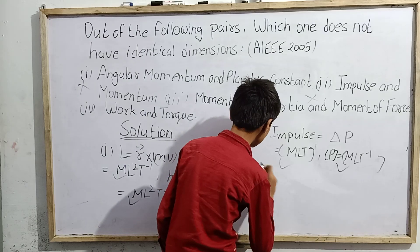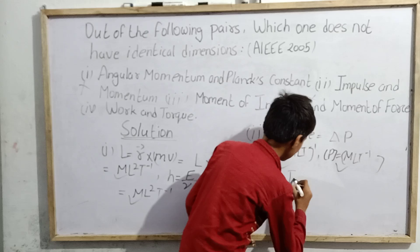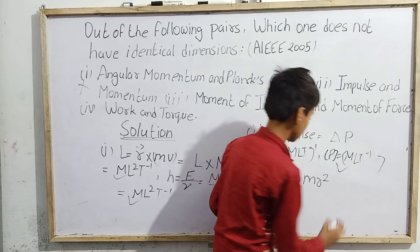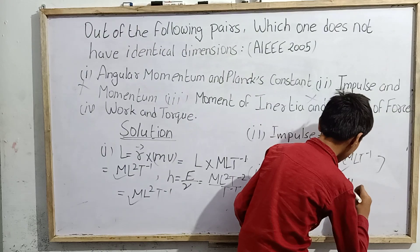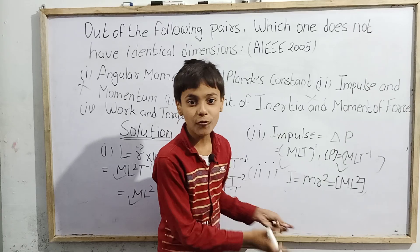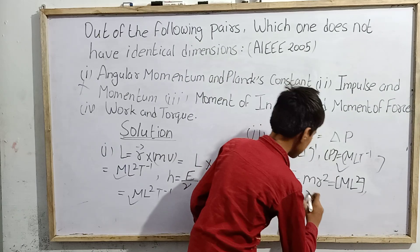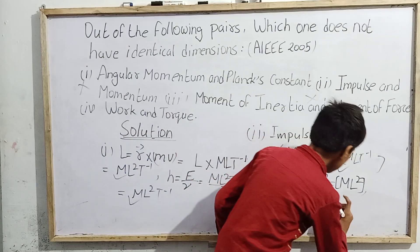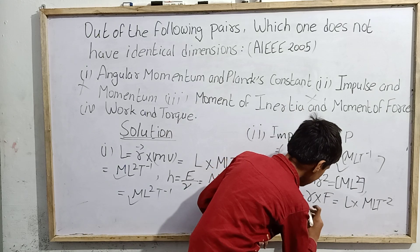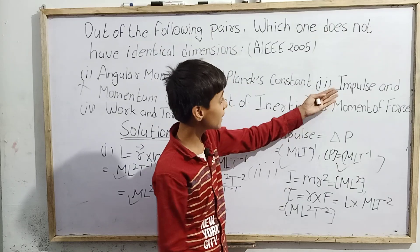For option C — moment of inertia and moment of force: moment of inertia I = mr², which gives dimensions ML². Moment of force is torque τ = r × F, which gives dimensions L × MLT⁻² = ML²T⁻². So moment of inertia has dimensions ML², while moment of force has dimensions ML²T⁻².